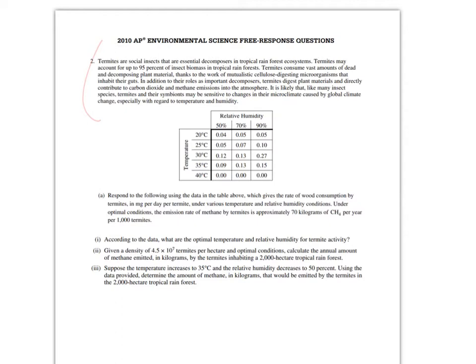Letter A. Respond to the following using the data in the table above, which gives the rate of wood consumption by termites in milligrams per day per termite under various temperature and relative humidity. Under optimal conditions, the emission rate of methane by termites is approximately 70 kilograms of methane per year per 1,000 termites. Part I: According to the data, what are the optimal temperature and relative humidity for termite activity?